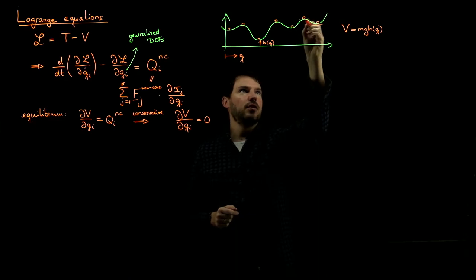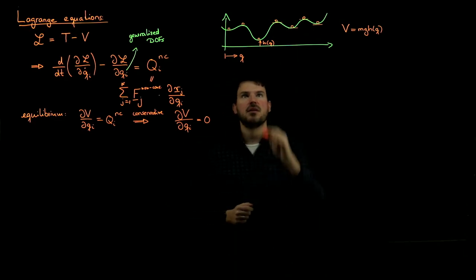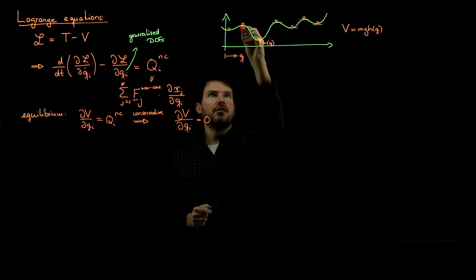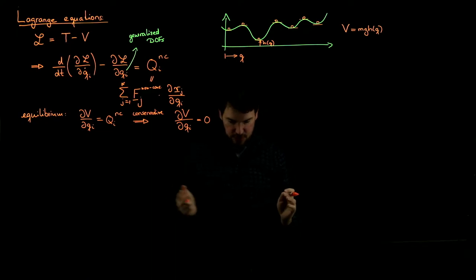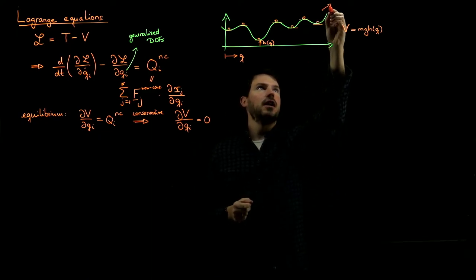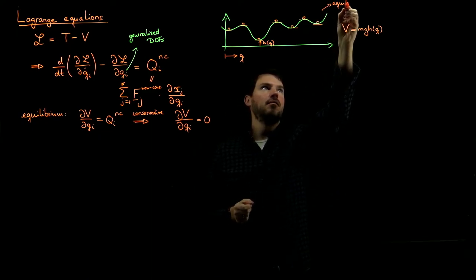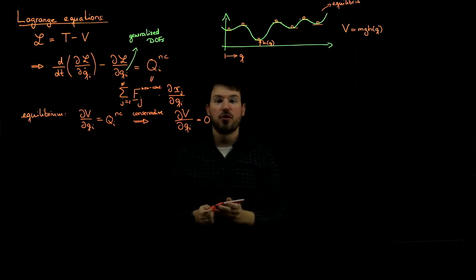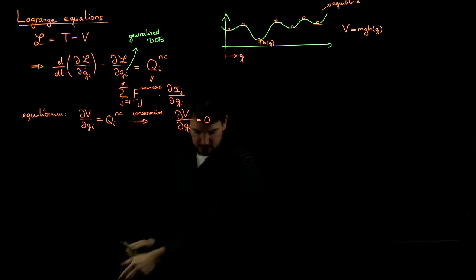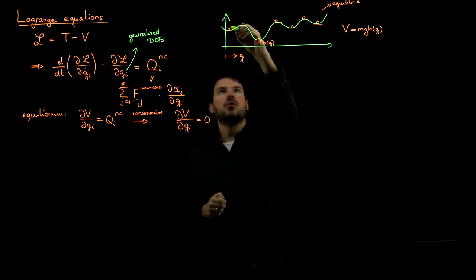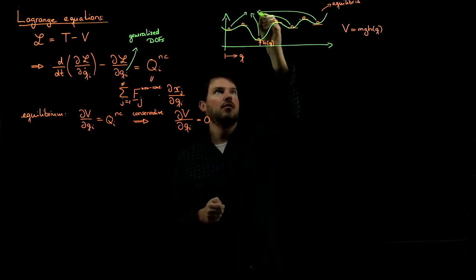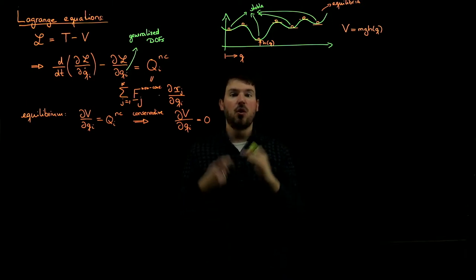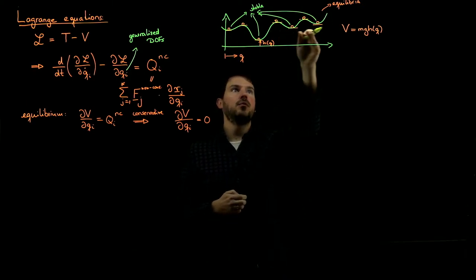All those points where the first derivative vanishes are stationary points, and these are points in equilibrium. If you put the ball right there, it will stay there — that's what we call an equilibrium. We differentiated in total three types of equilibria. First, there are those where we are in the valley — these are stable equilibria. If you put the ball there and slightly perturb it, it will always return to the minimum energy position.